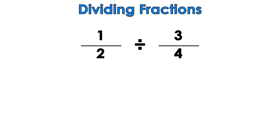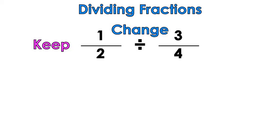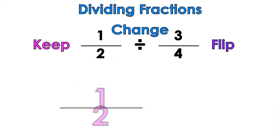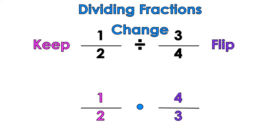So we're dividing fractions. I have one-half divided by three-fourths. When you learn how to divide fractions, you learn that you keep, you change the sign, and then you flip the second fraction. So we're going to keep the first one, change the sign to multiplication, and flip. Instead of three over four, it's going to be four over three. And once we do that, we can multiply them.